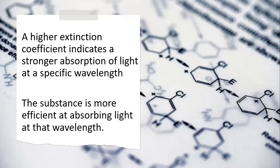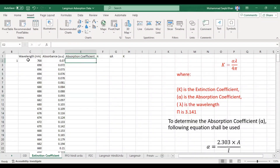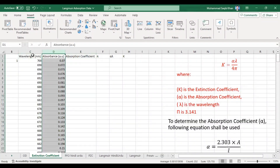As we know, the extinction coefficient is the measure of absorption of light at a particular wavelength. So, the higher the extinction coefficient, the more efficient that substance is at absorbing light at that particular wavelength. Let's go to our data and see how to measure the absorption coefficient.